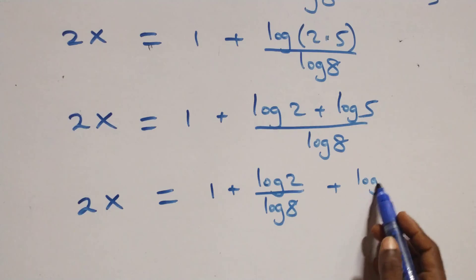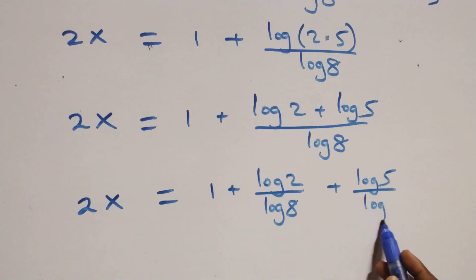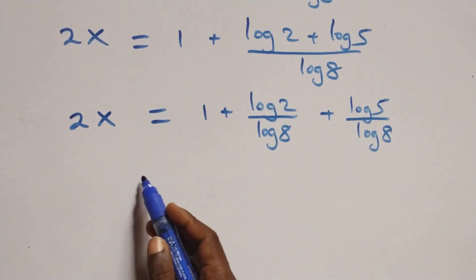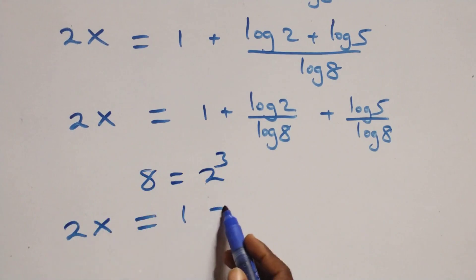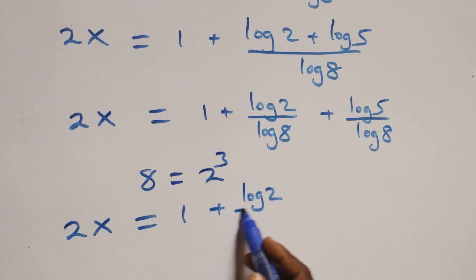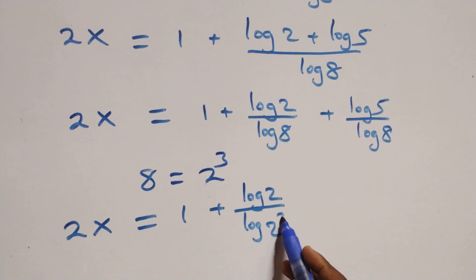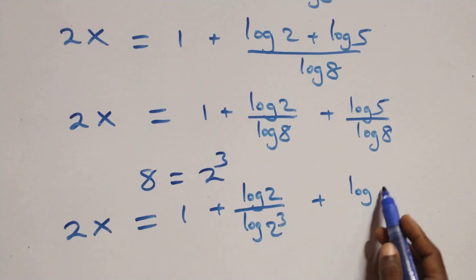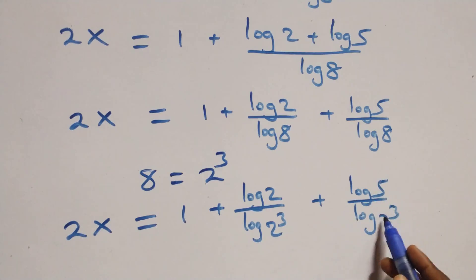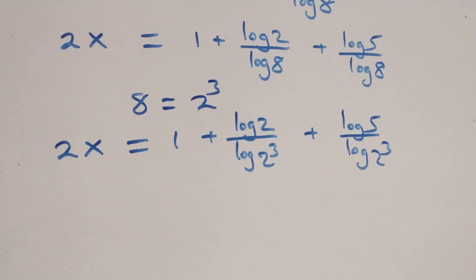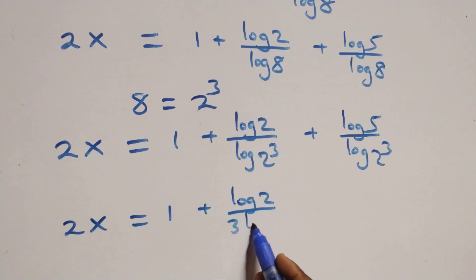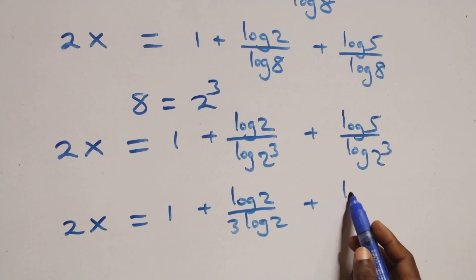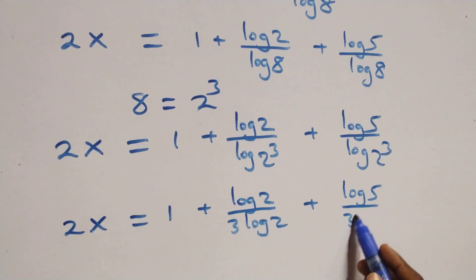Here, 8 can be expressed as 2 cubed, that is 2 raised to power 3. So we have 2x equals to log 2 over log(2 raised to power 3) plus log 5 over log(2 raised to power 3). Applying the power rule of logarithms, the 3 comes out and we have 2x equals to 1 plus log 2 over 3 log 2 plus log 5 over 3 log 2.